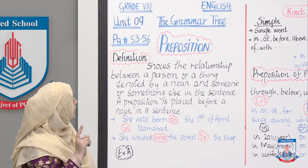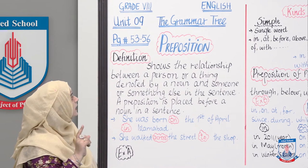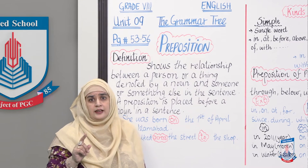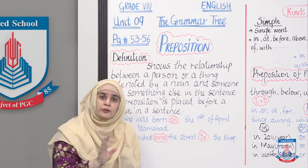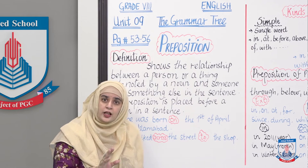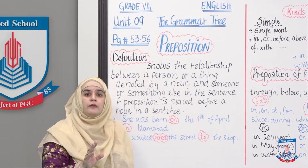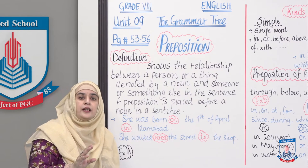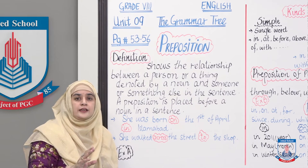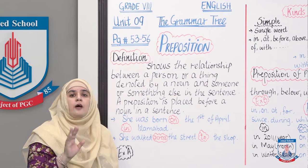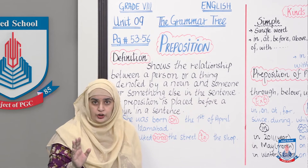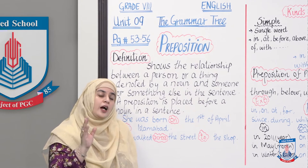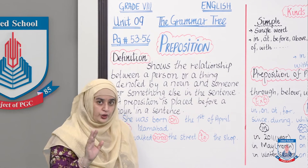A preposition is placed before a noun in a sentence. Noun se pehle usually preposition placed hoti hai. Aur wo yeh batati hai ki kisi bhi noun ya subject ka aapas mein kya interaction hai, kya relationship hai — yeh hoti hai aapki preposition.